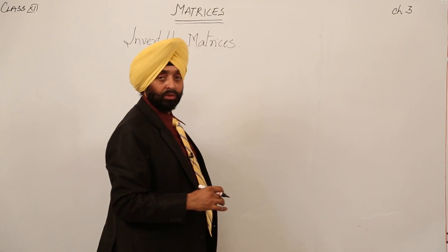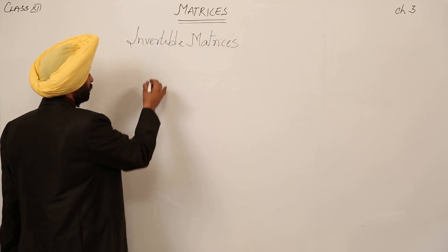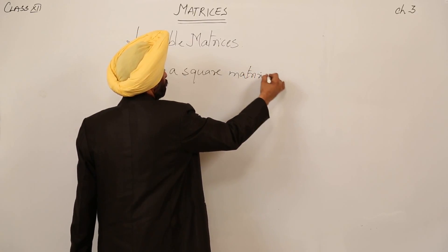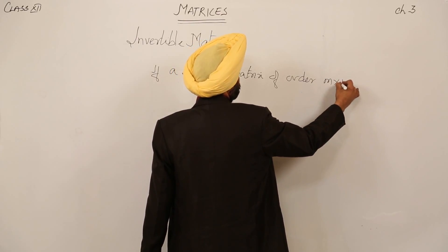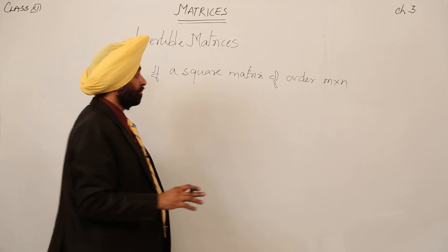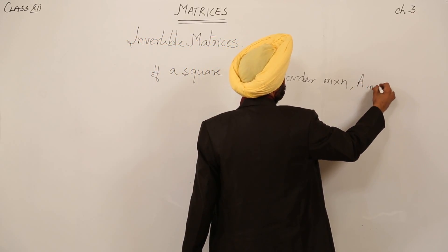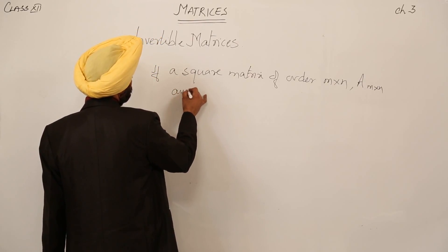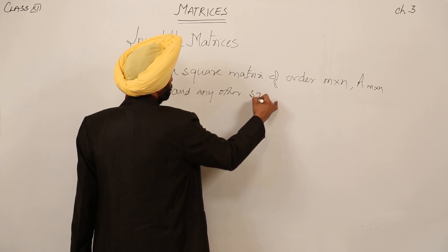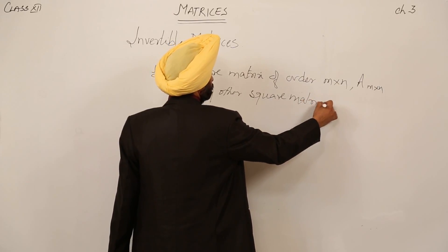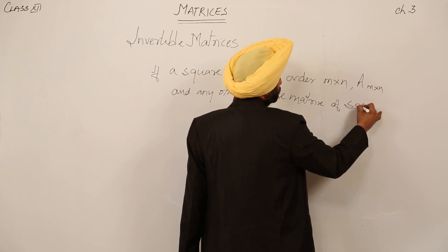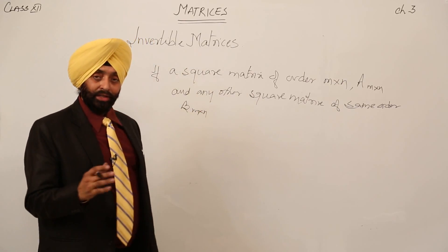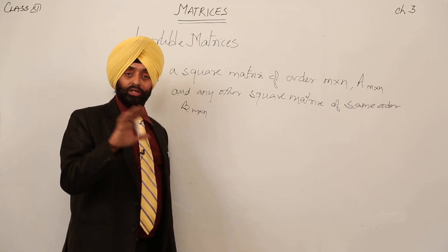What invertible matrices means: if we have a square matrix of order m by n, let it be A, and any other square matrix of the same order, let it be B, we consider these two square matrices A and B of the same order.